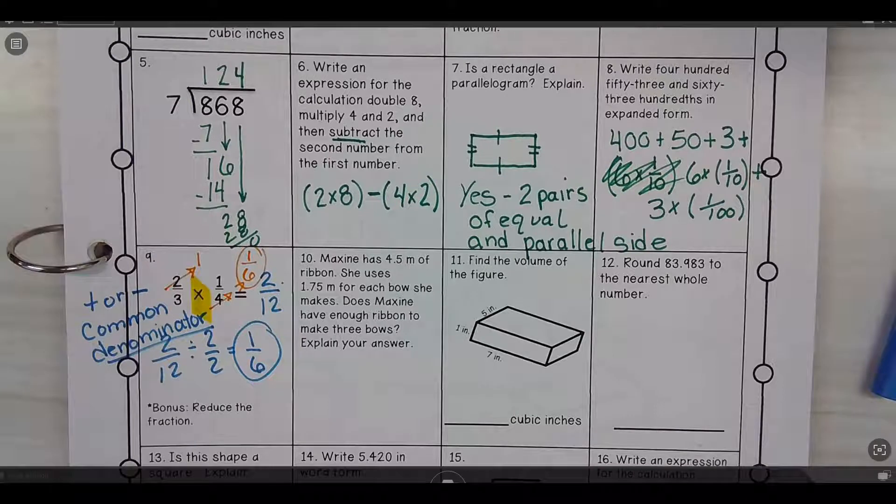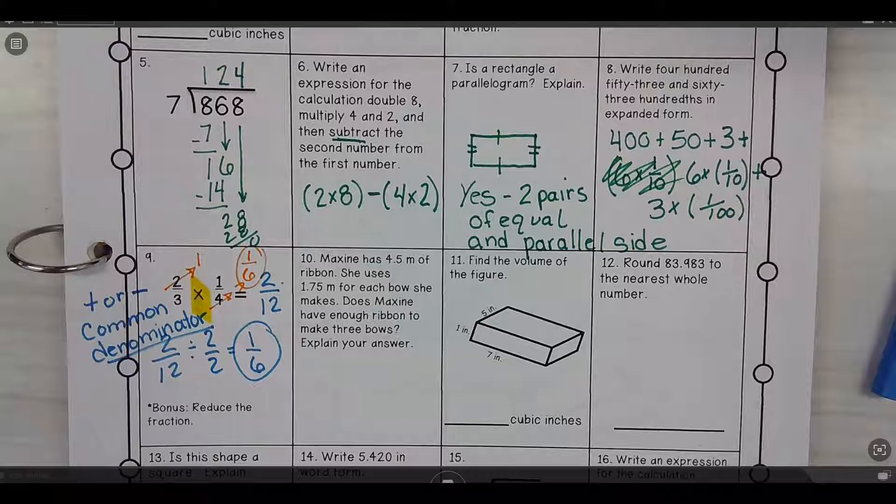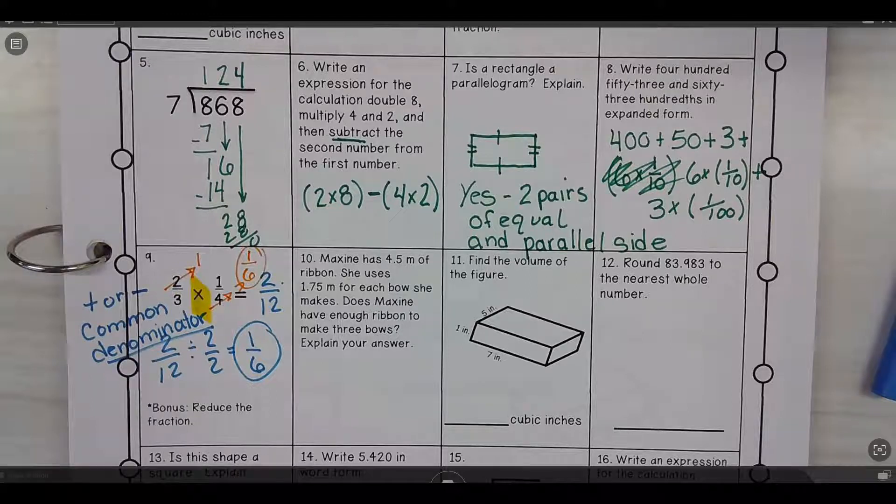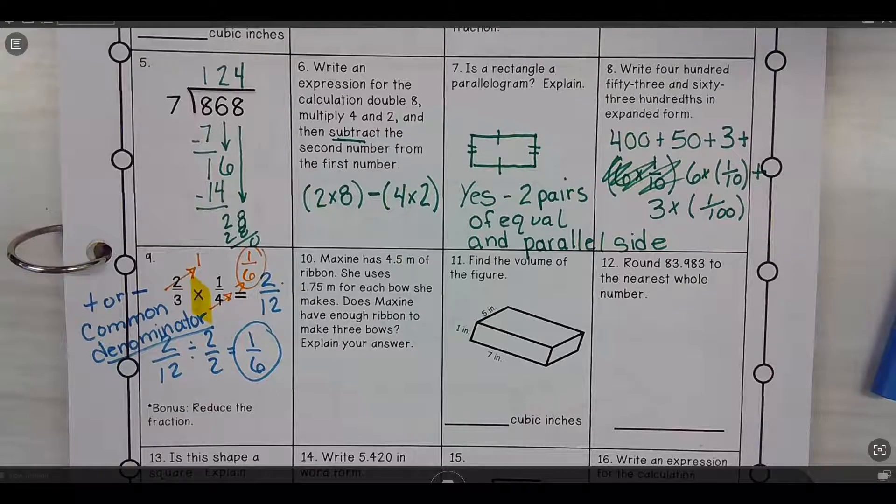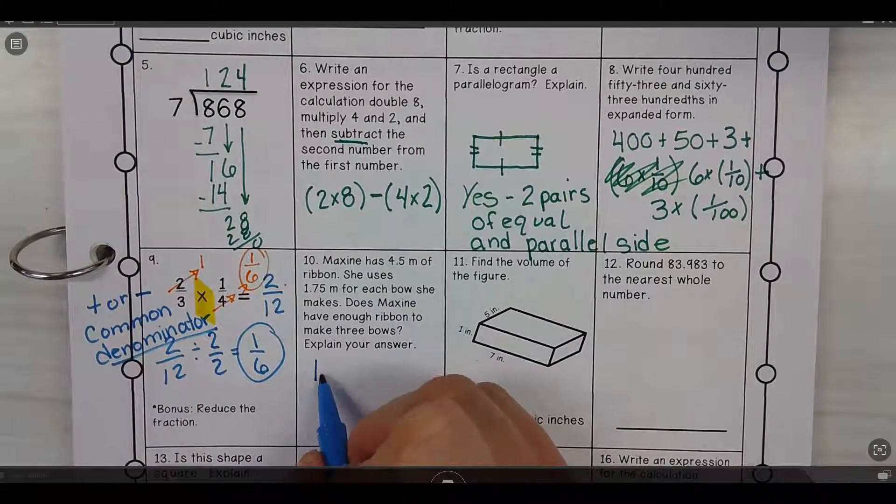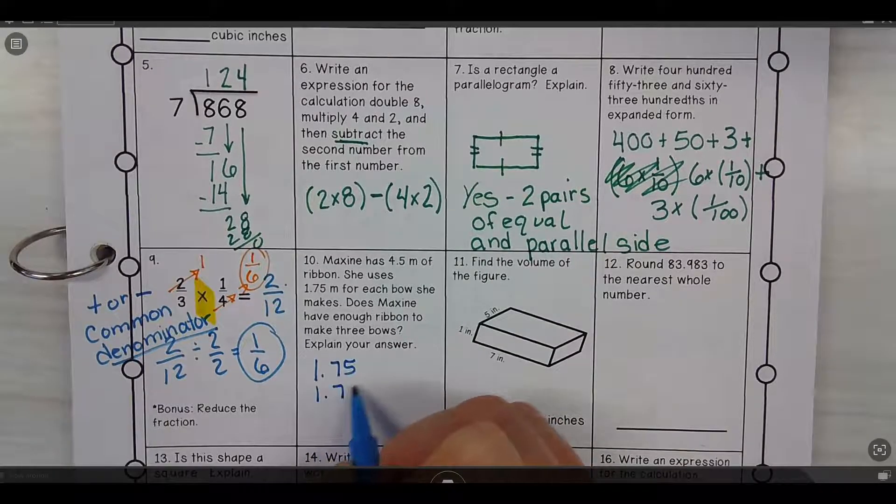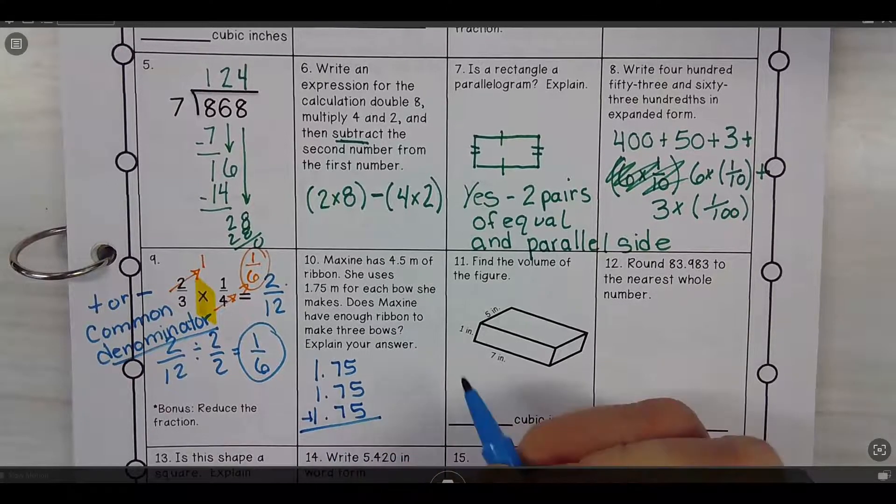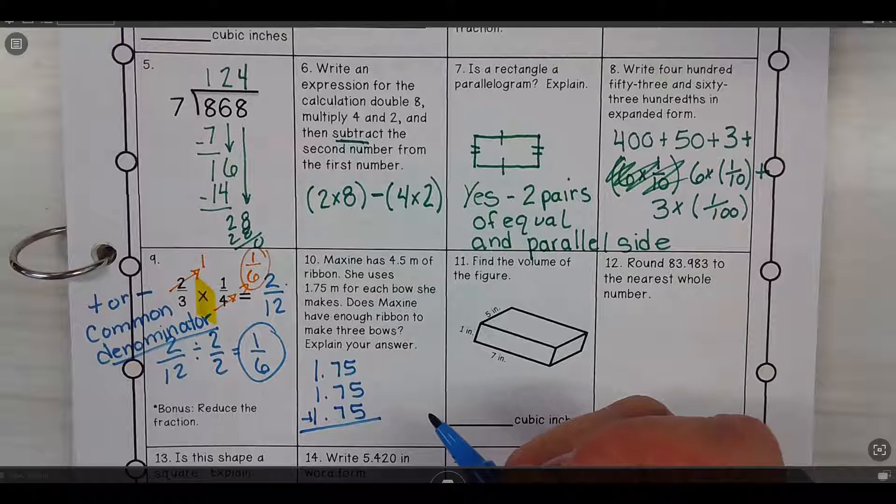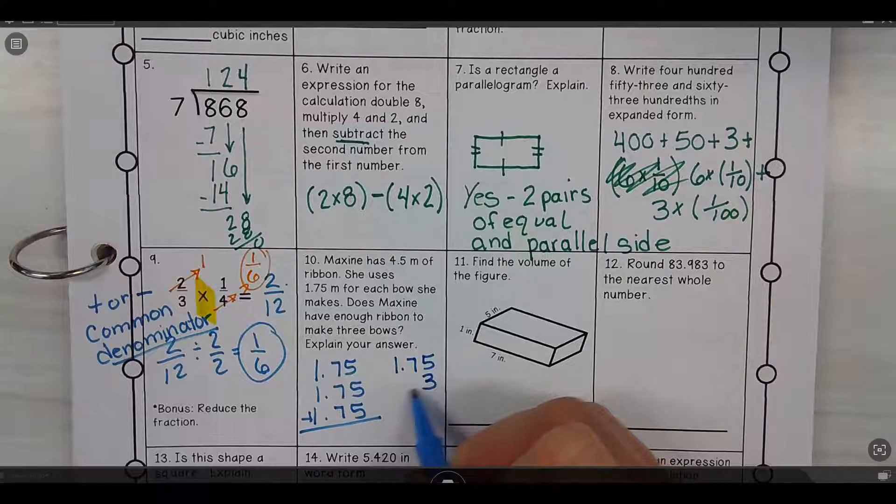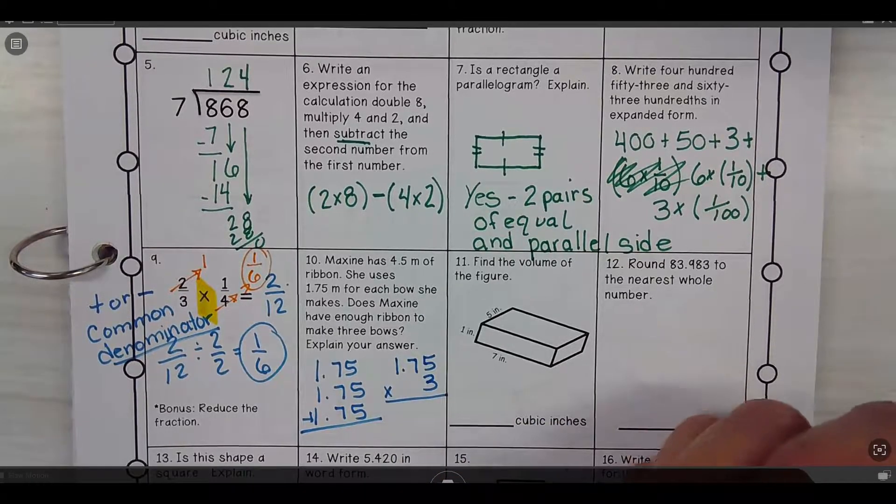I got no because one and three quarters times three would be five and a quarter, and that's too much. So there's a couple different ways you could do this. The first one's going to be 1.75, the second one's going to be 1.75, the third one's going to be 1.75, and you can add them. Or what some people did, that's the way Ms. Richardson looked at, was 1.75 times three.